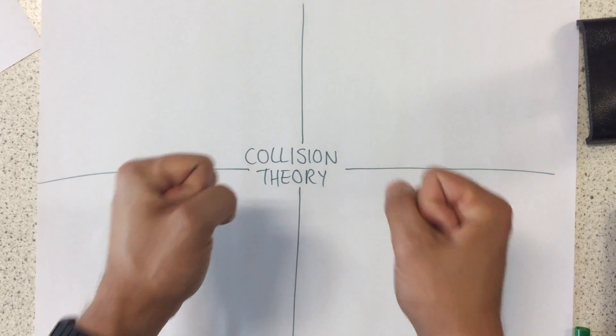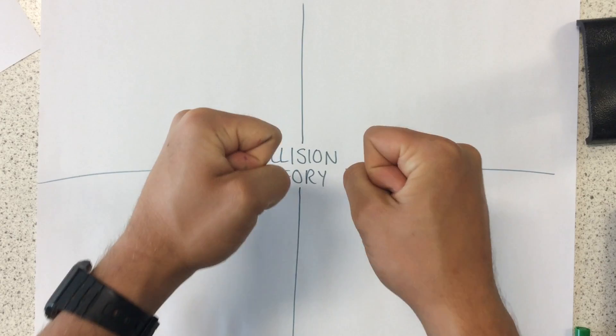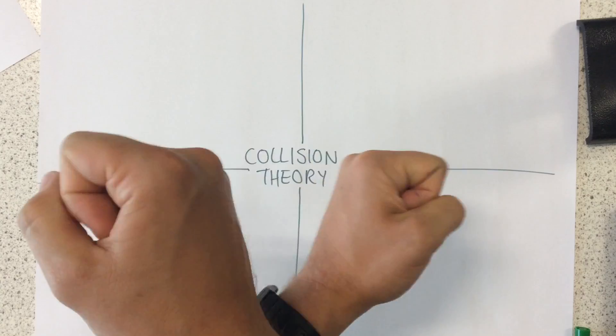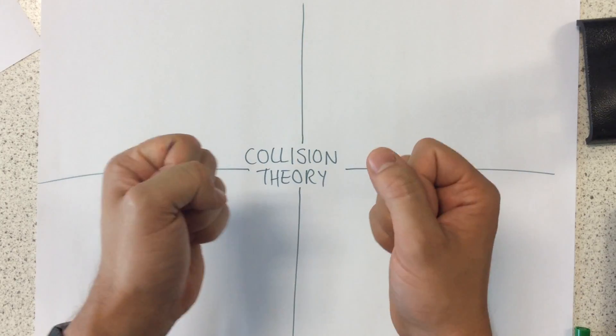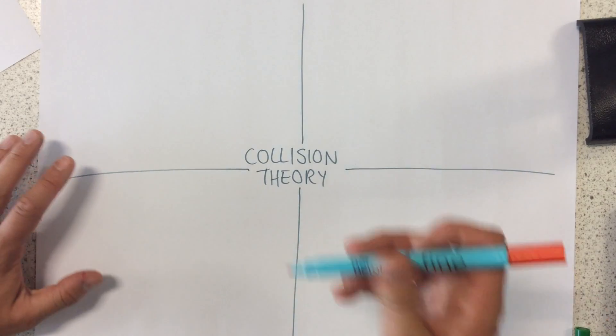There are four different things that we need to know about collision theory. Basically, in order for a chemical reaction to happen, the particles need to collide with enough energy for a reaction to occur. If they don't collide, no reactions can occur. So there are four things that we know that influence this.